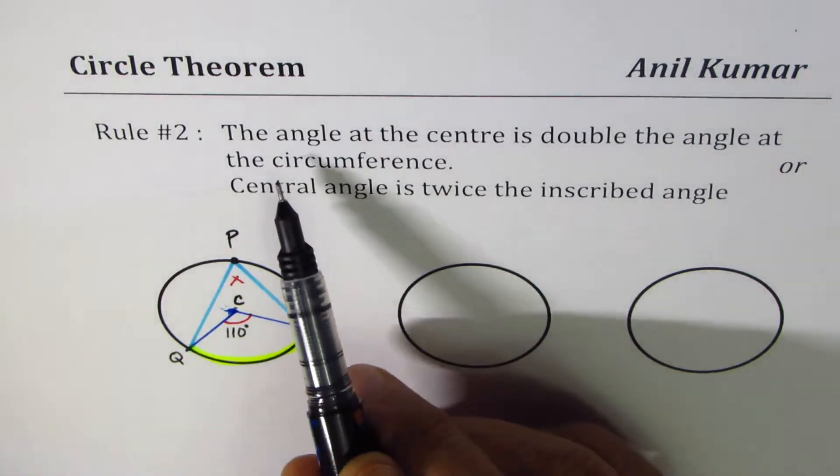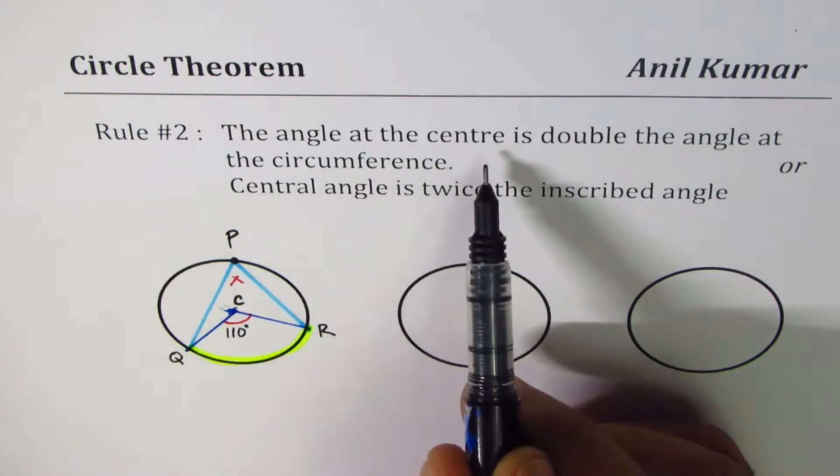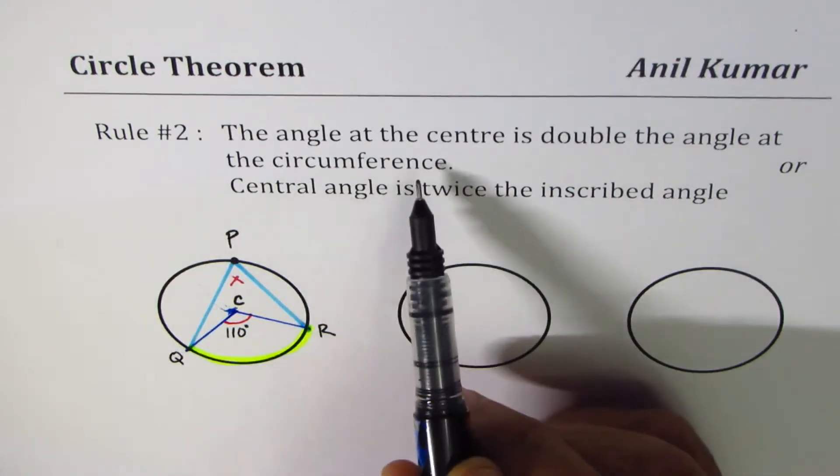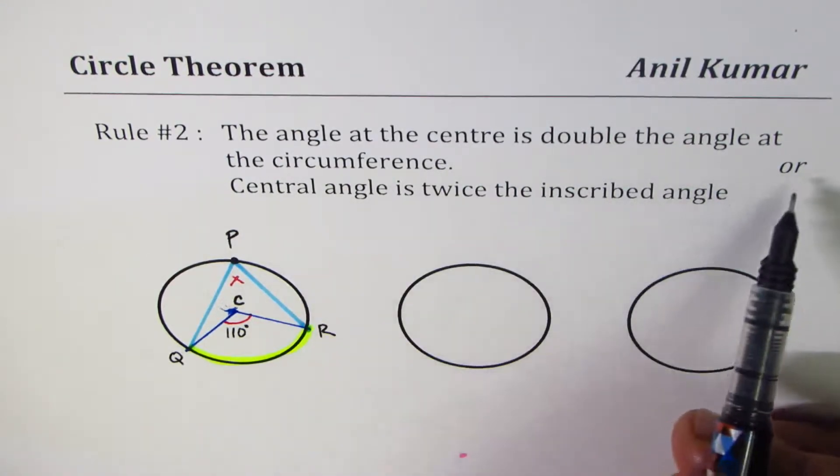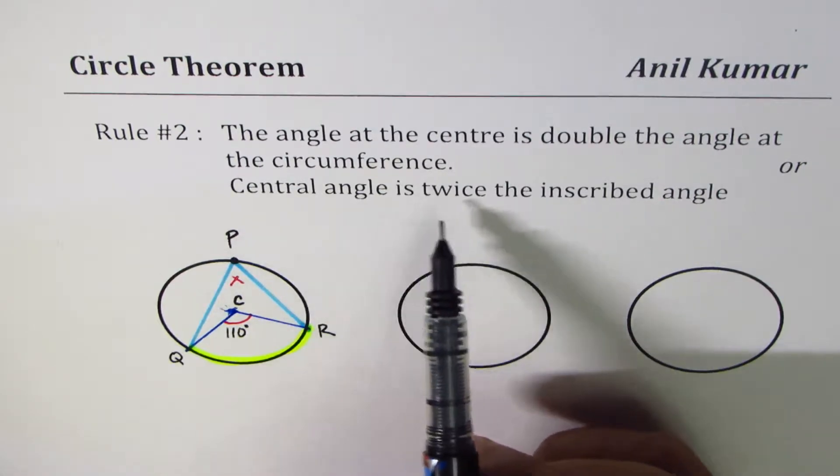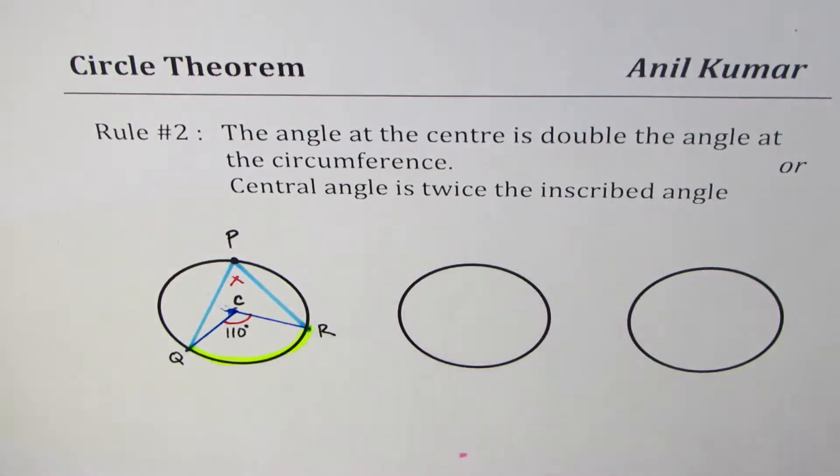The rule is, the angle at the center is double the angle at the circumference. We could also say that central angle is twice the inscribed angle.